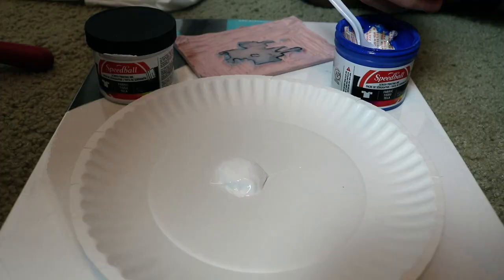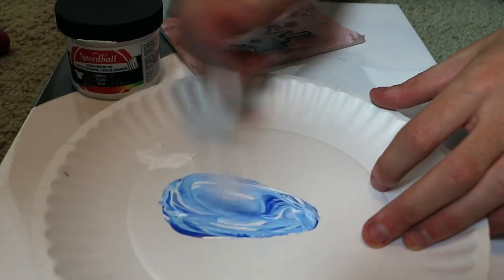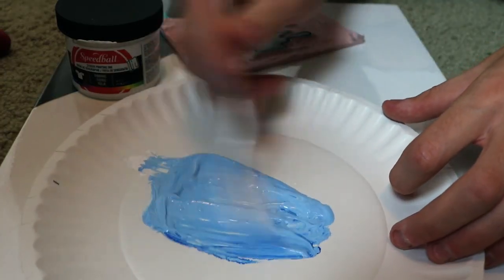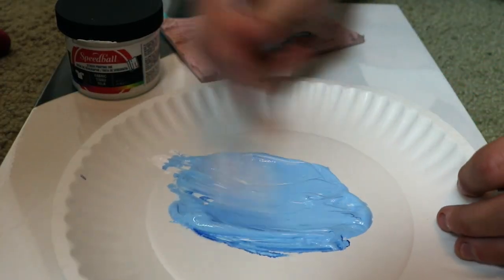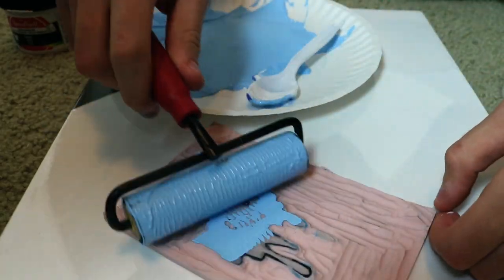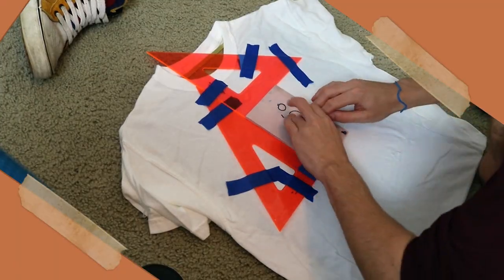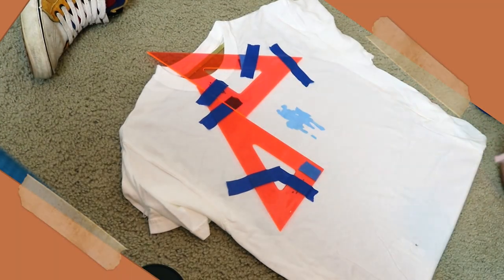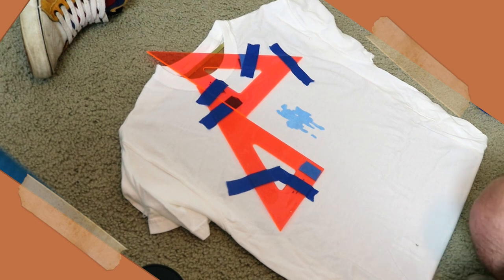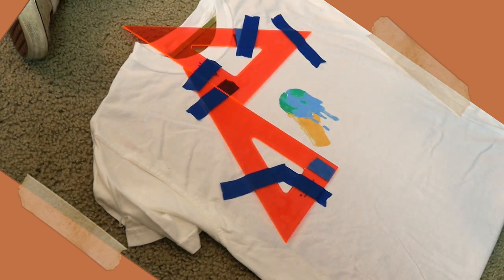I didn't show it but I ironed out my shirt. Started mixing my paint. I started with blue and I pushed the blue block onto it, then the green, then the orange, and then the outline.